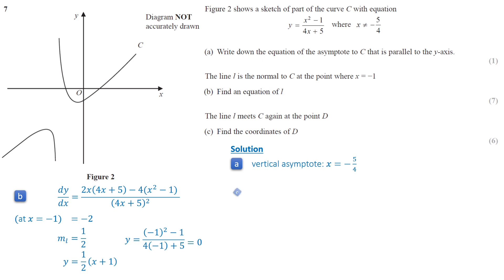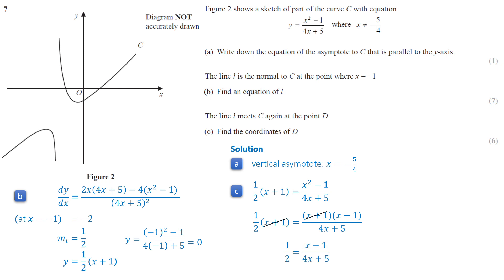In part C, the normal line L meets the curve at another point. We set the equation of the normal line equal to the equation of the curve. Factorizing x squared minus 1 on the right-hand side, and canceling x plus 1 from both sides, since we are looking for a point where x does not equal negative 1, we have half equals (x minus 1) divided by (4x plus 5). Solving the equation gives x equals negative 7 over 2. Substituting into the normal line equation, y equals negative 5 over 4. So the coordinates of D are (negative 7 over 2, negative 5 over 4).